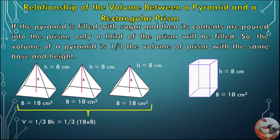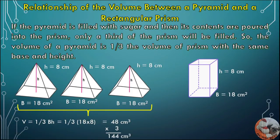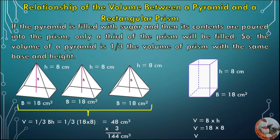The volume of one pyramid is 1/3 × 18 × 8, which equals 48 cubic centimeters. If you multiply by 3, because there are 3 pyramids, you get 144 cubic centimeters. The volume of the rectangular prism is base area times height: 18 × 8 = 144 cubic centimeters.